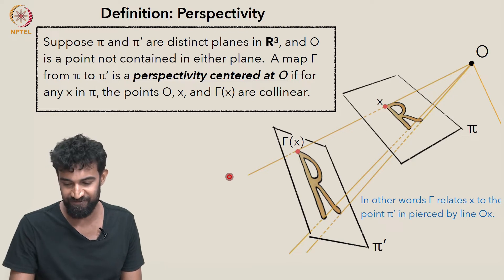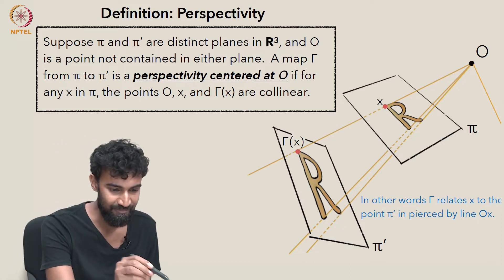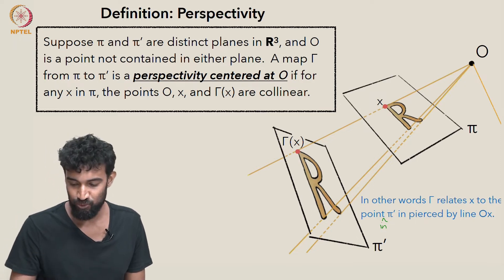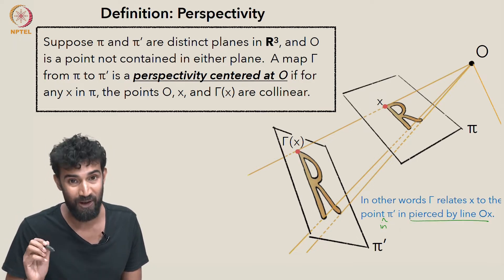In other words, if γ relates x to the point in π', the point in the plane π' which is pierced by the line Ox.